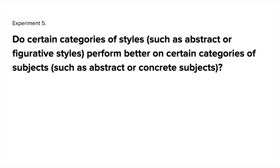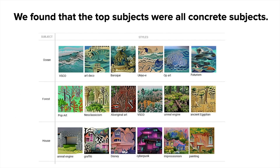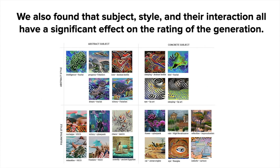Our last experiment focused on the interaction of subject and style. We wanted to understand whether certain categories of styles, such as abstract or figurative, perform better on certain categories of subjects, such as abstract or concrete subjects. To study this, we generated from 51 subjects and 31 styles. We found that the top 10 subjects were all concrete in nature and universal across most cultures — for example, oceans, forests, eyes, and birds. Additionally, we found a moderate to strong positive association between the concreteness of the noun and generation quality, meaning concrete subjects tended to do better on average. Running a two-way ANOVA test confirmed that subject, style, and their interaction all had a significant effect on the rating of the generation.